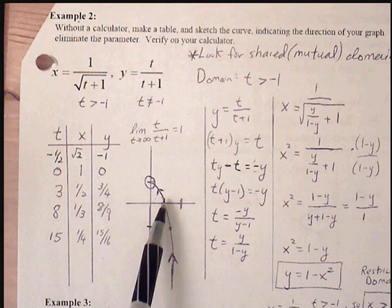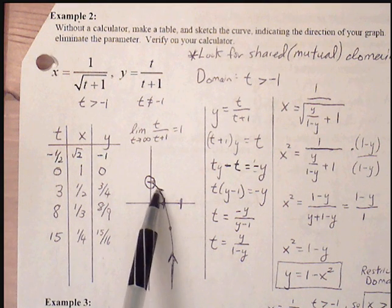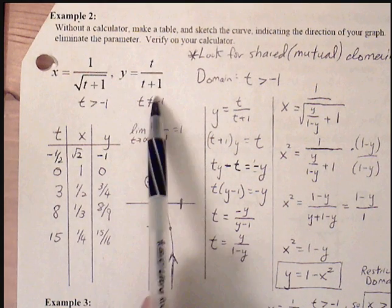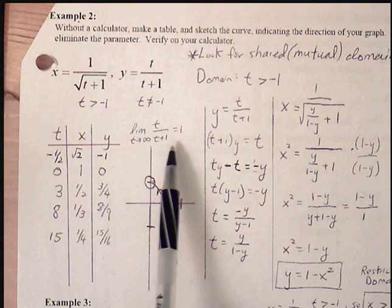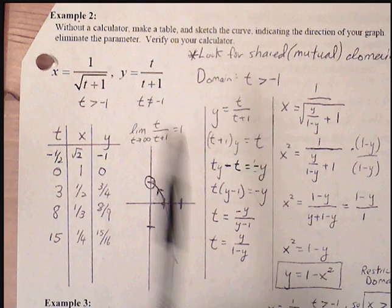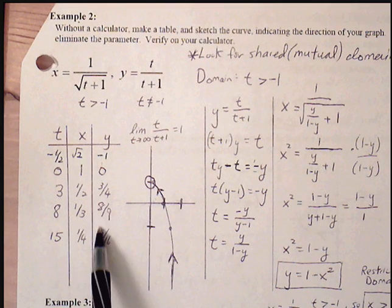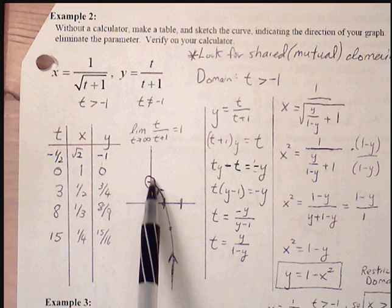And so that will give us this portion of the graph, right, where we're getting closer and closer to 1. And we see that if we find the limit of t over t plus 1, as t approaches infinity, that will get us to 1. So we know that it gets closer and closer to 1, but never reach it. We look at these y values, we'll get closer to 1 without reaching, so we put an open circle here.